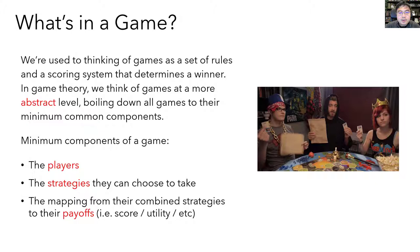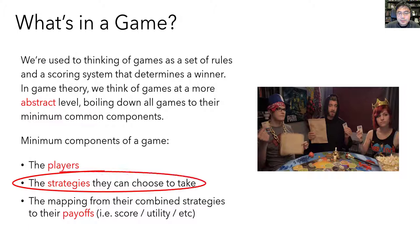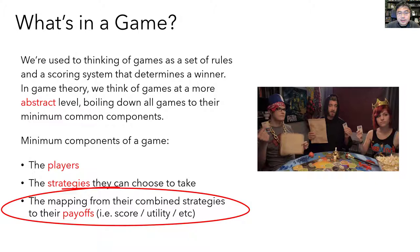Before we can study game theory, we have to first define what we mean by a game. We're used to thinking of games as a set of rules and a scoring system that determines the winner. But in game theory, instead of getting lost in all the rules details, we want to think of games at a more abstract level and boil them down to their minimum core components. Those minimum components are: first, the players; second, the strategies that each player can choose; and finally, some mapping from the players' chosen strategies into each player's payoffs — meaning their score, utility, or profit from playing the game.